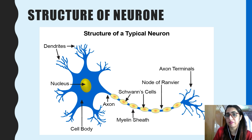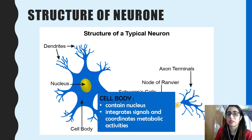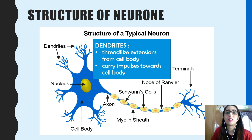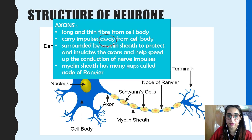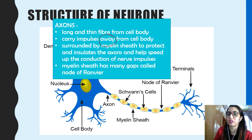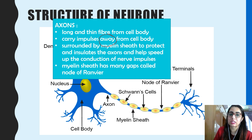There are two types of nerve fibers that extend from the cell body. The axon transmits impulses away from the cell body, while the dendrites transmit impulses towards the cell body. The cell body contains the nucleus and integrates signals and coordinates metabolic activities. Dendrites are thread-like extensions from the cell body that carry impulses towards it. The axon is a thin, long fiber that carries impulses away from the cell body, surrounded by myelin sheath to protect and insulate it and to speed up conduction of nerve impulses. The gaps in the myelin sheath are called nodes of Ranvier.